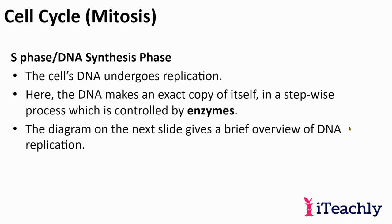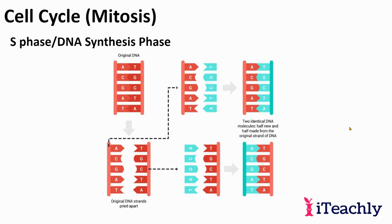The S phase is where the cell undergoes DNA replication. The DNA makes an exact copy in a stepwise process controlled by many different proteins. The original DNA is double-stranded and usually in a helix. The A attaches to T, and complementary base pairs are A-T and C-G. These are held together by weak hydrogen bonds. Those weak hydrogen bonds unzip, and then complementary nucleotides come in — A goes to T, C goes to G — and you end up with a strand exactly the same as the parent.